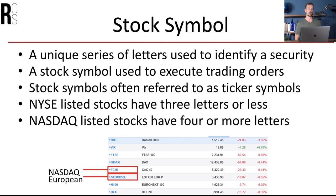A bear market is when share prices are falling and most investors are selling or just out of the market entirely. Bearish investors make money from falling stock prices, similar to how a bear would attack with their claw. So if you hear somebody saying they're bullish on a stock, that means they think it's gonna go up. If they're bearish on a stock, they expect it to go down, and they're making money from that stock price going down, typically through something called a short sale.